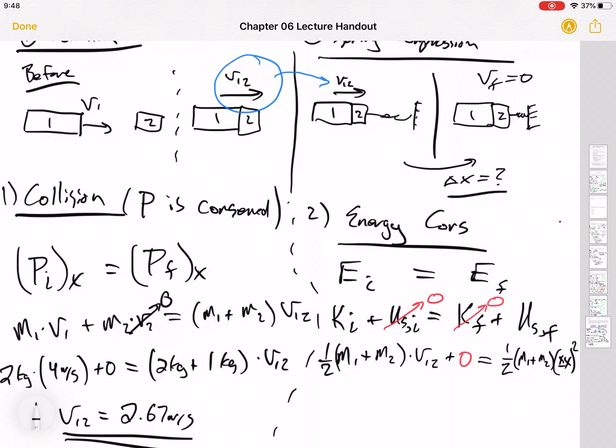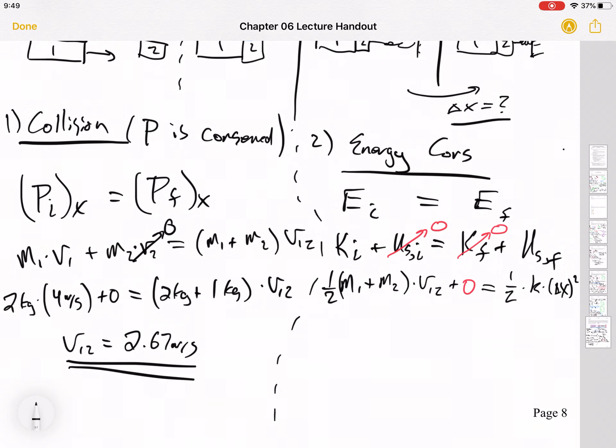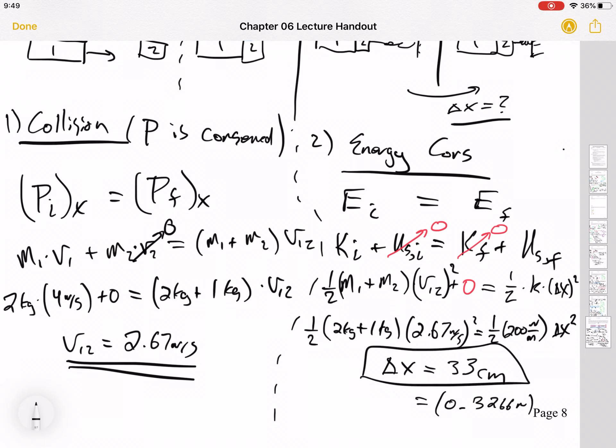Actually I screwed this up. It's not masses, it's half K delta X squared. Yeah, this makes more sense. So we're at a point where we can plug some numbers in. So there's half times 2 kilograms plus 1 kilogram times that 2.67, that should be squared, equals half times 200 newtons per meter times this delta X squared. What I get for delta X is 0.3266 meters, which is like 33 centimeters.